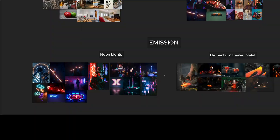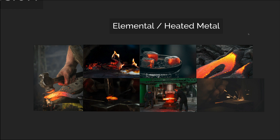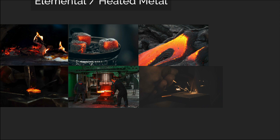Let's look at emission examples from everyday life. Neon lights are literally shooting light into the scene. Superheated metal, like a blacksmith pounding metal until it glows, is common in metallurgy. Hot coals on a shisha or hookah, embers of a fire, sparks, and lava — all things that are so hot they are emitting light into the scene.